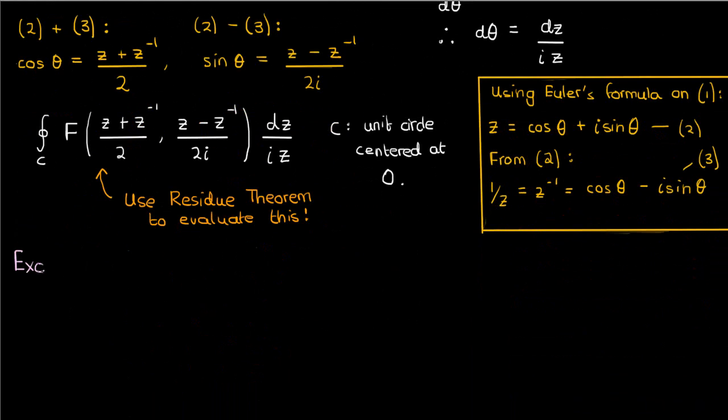So let's do an example involving finding a definite integral that contains sine and cosine. In this example, we want to integrate 1 over 5 plus 4 sine theta from 0 to 2π. This is where you'll see why the residue theorem is so useful. Because if I were to ask you to integrate this using the regular techniques you learned in calculus 2, then you wouldn't be able to do anything here.